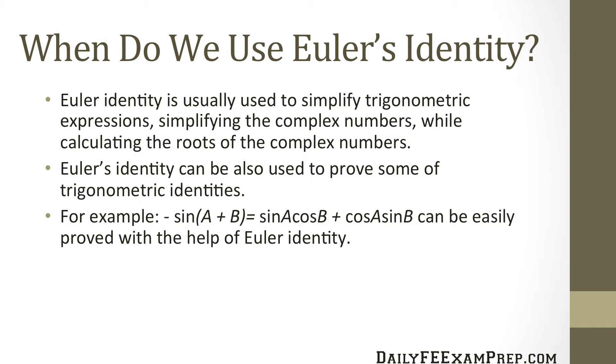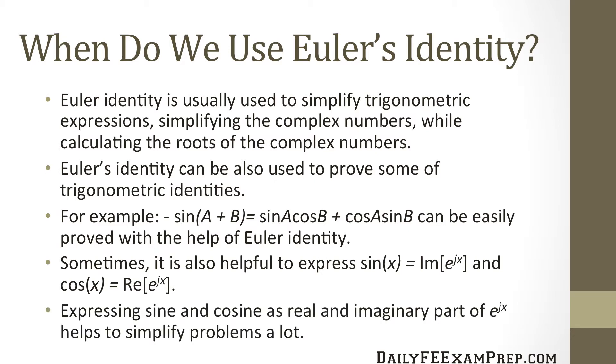For example, sine of A plus B equals sine A times cosine B plus cosine A times sine B can be easily proved with the help of Euler's identity. Sometimes it's also helpful to express sine of X as the imaginary form of e raised to the jX and cosine X as the real part of e raised to the jX. So expressing sine and cosine as real and imaginary parts of e raised to the jX helps to simplify lots of problems.